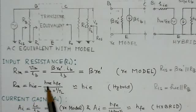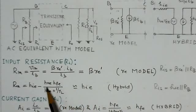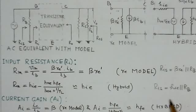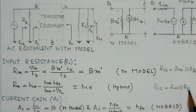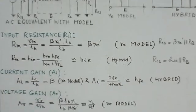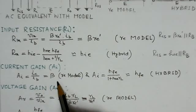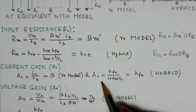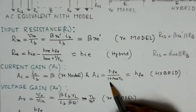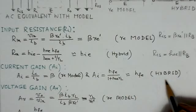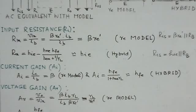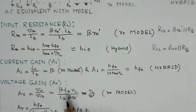For the hybrid equivalent model, the input resistance Ri comes out to be HIE minus (HRE × HFE) / (HOE + 1/RL), which approximately equals HIE since HRE is very small. The stage input resistance RIS is HIE in parallel with RB, the biasing resistor. For current gain, IC over IB equals beta for the RE model, and for the hybrid model it is HFE / (1 + HOE × RL), which approximately equals HFE.